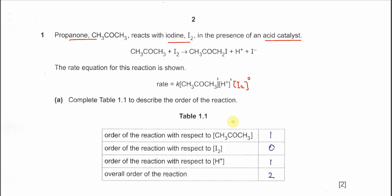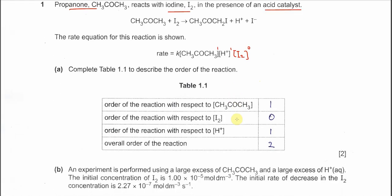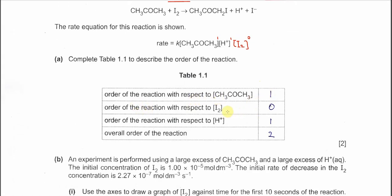So we can now complete Table 1.1. The order for propanol is first order, iodine is zero order, hydrogen ion is first order, and the overall order is the sum of these — so it is second order overall.